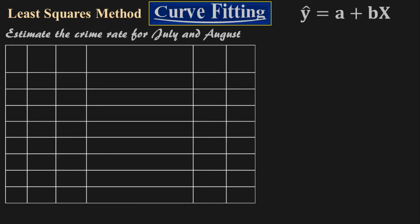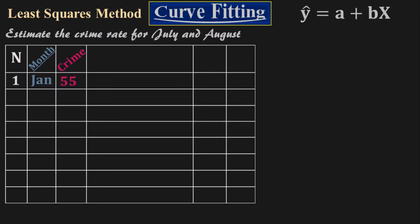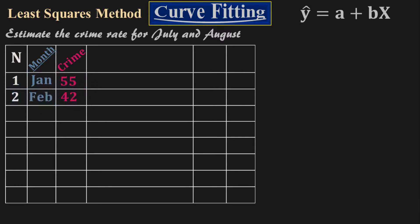This is my table. Here is my n, this is my month column, x for the month number, and y for crime cases. For January we had 55 crime cases, February 42, March 30, April 50, May 25, and June 15 cases.